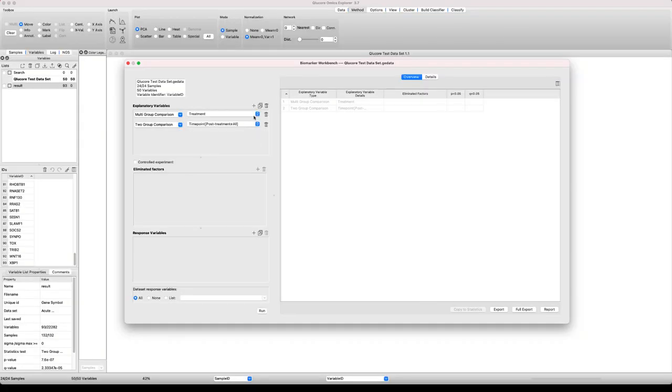Another way of undertaking statistical analysis is to use the biomarker workbench. Here, you can run all of your tests of interest in batch mode, enabling you to quickly test many hypotheses in parallel and saving time. When we press run, the tests are immediately processed.